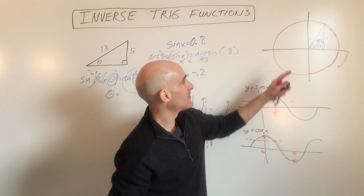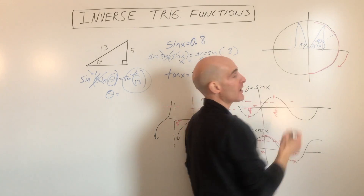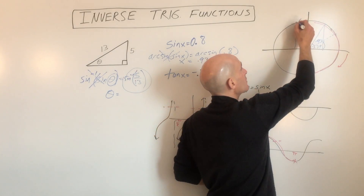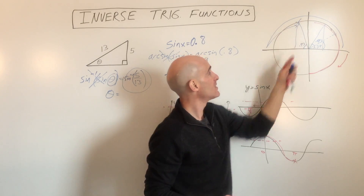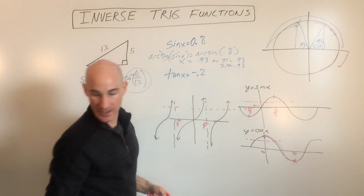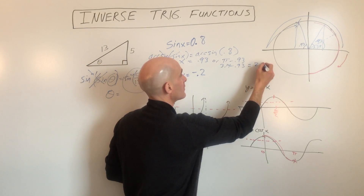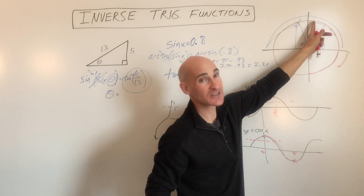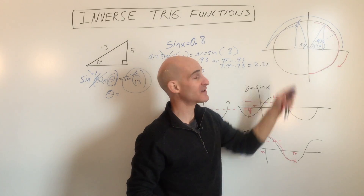But where else is sine positive? In the second quadrant. So we draw that same triangle — the reference angle is 0.93. But remember, when we measure angles we measure from the positive x-axis counterclockwise. So that second solution is pi minus 0.93, which is 3.14 minus 0.93, giving us 2.21. Those are our two answers on the unit circle. The calculator only gave us the first answer because of the restricted domain from negative pi over 2 to positive pi over 2 — it's up to you to find where else sine is positive.